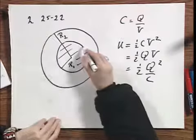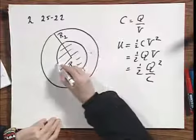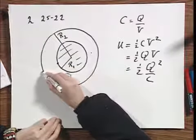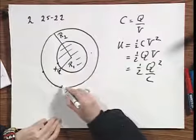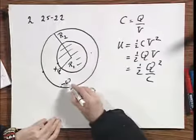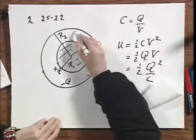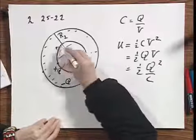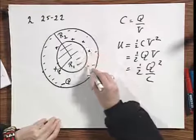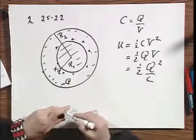And the question now is what a potential difference between here and here if the charge on this is plus Q and the charge on here is minus Q. The charge on here will be on the inside of the sphere. I leave you with the exercise to prove that. And the charge on the inner sphere will be on the outside of the sphere.